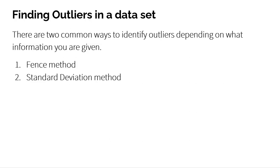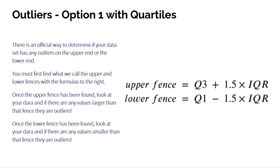One is called the fence method and one is called the standard deviation method. Those aren't really official mathematical names, but that's kind of what I call them — basically using fences or using standard deviation. The fence method is the first way, where we use our quartiles. It's actually really simple.